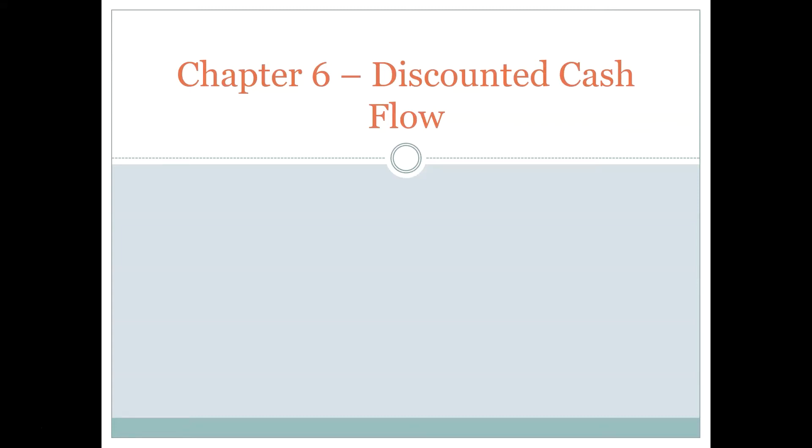Welcome back. In this lecture we're going to talk about Chapter 6, which is mostly a continuation of Chapter 5. The main difference is that we're going to make the problems a little more realistic — that's a theme for the class. We start with simple examples and the simplest formulas, then make things more realistic by adding what we call intermediate cash flows, meaning cash flows that occur in between the present value and the future value.